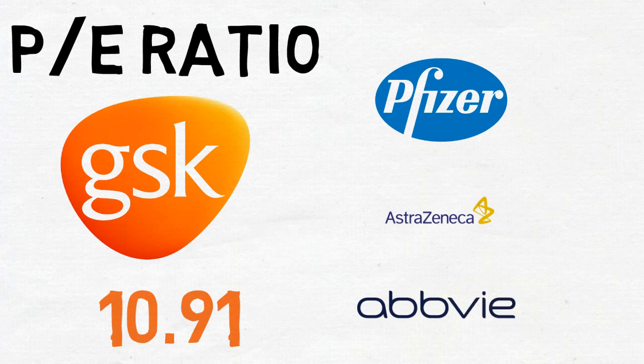Pfizer has a PE ratio of 14.56, AstraZeneca has a PE ratio of 51.46, AbbVie Inc has a PE ratio of 16.54. So in respect to these competitors GSK or GlaxoSmithKline's PE ratio looks pretty appealing.